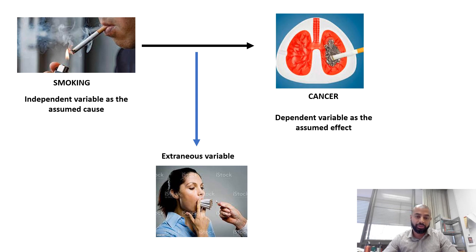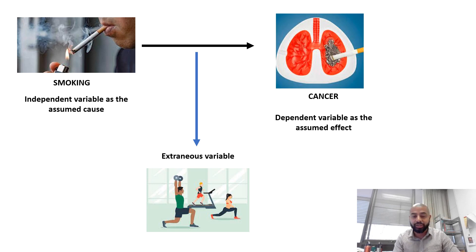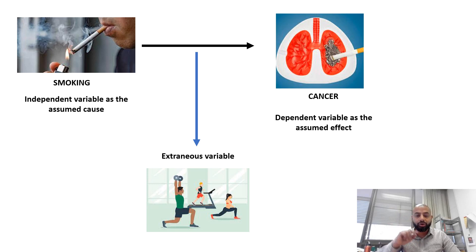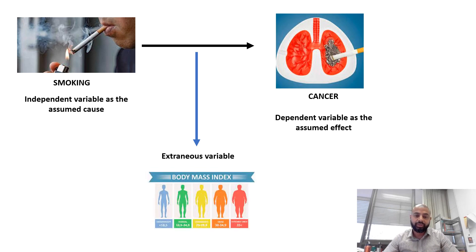Another extraneous variable could be exercise. Suppose two people have been smoking the same number of cigarettes for the same number of years and are the same age, but one person has been exercising a lot and one has not — and one got cancer and one didn't. How do you address that? How do you show that it is only smoking causing cancer, and that exercise does or does not prevent it?